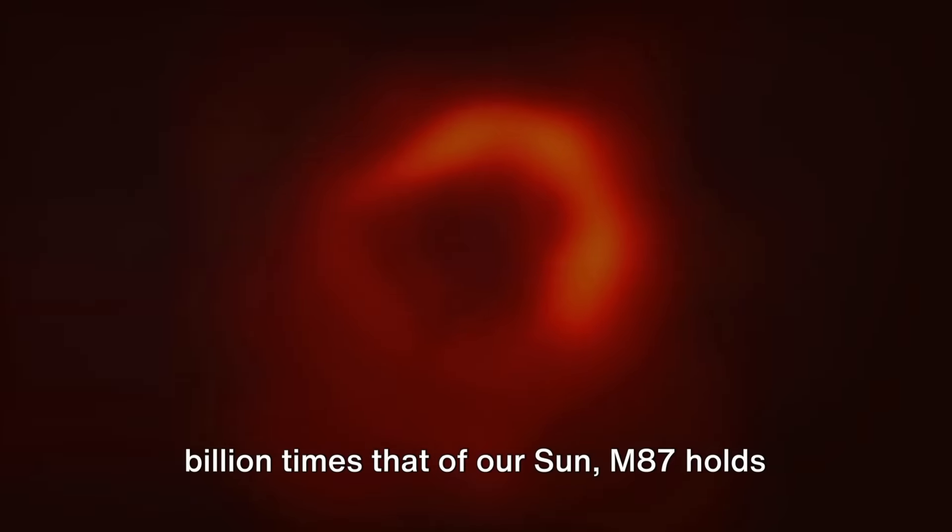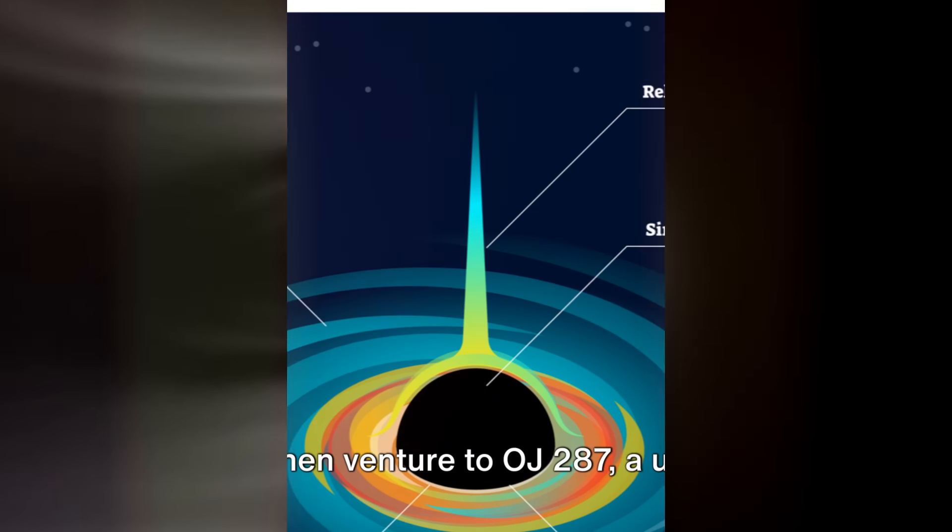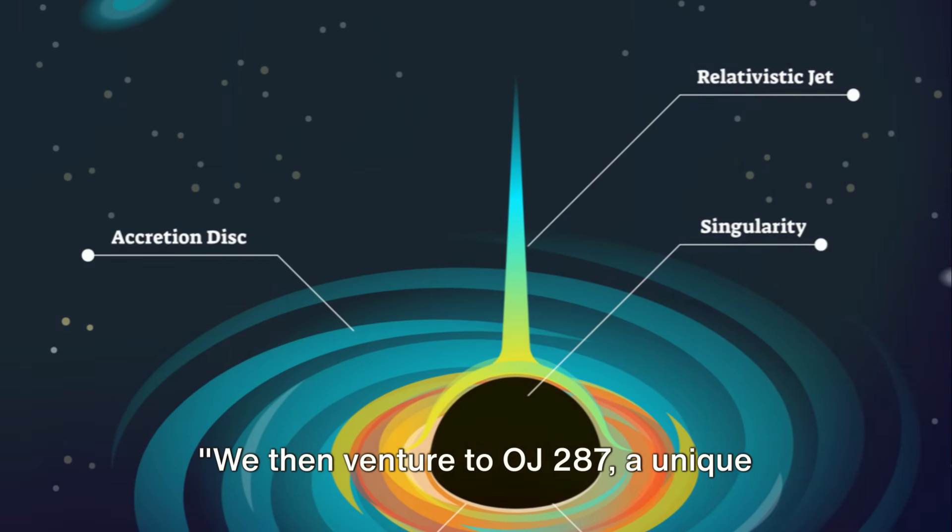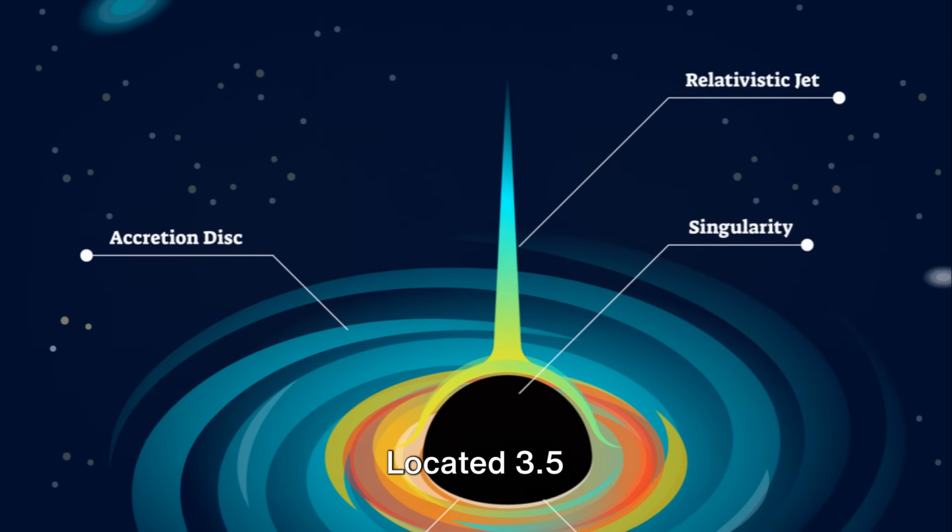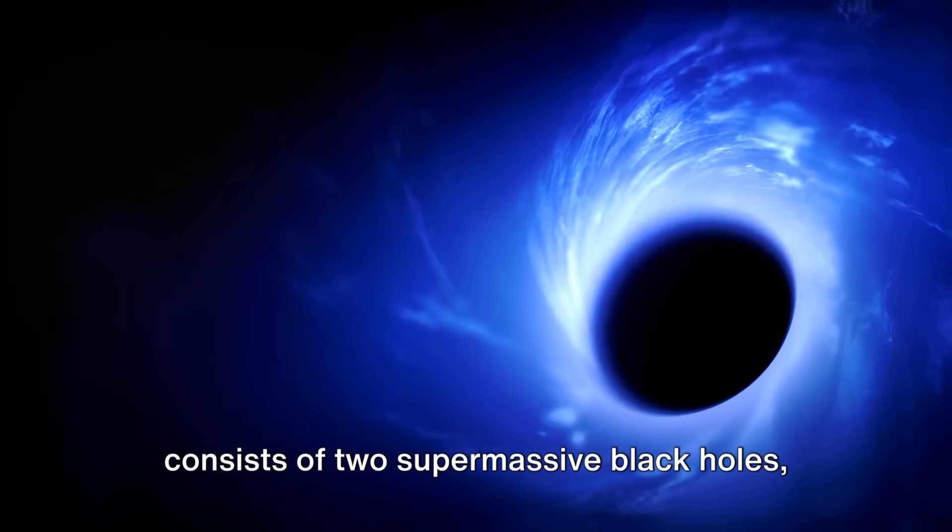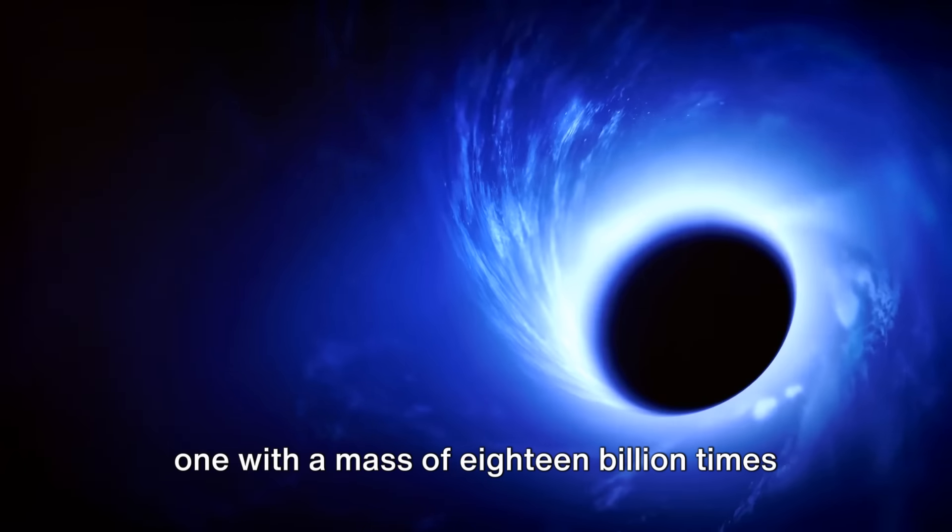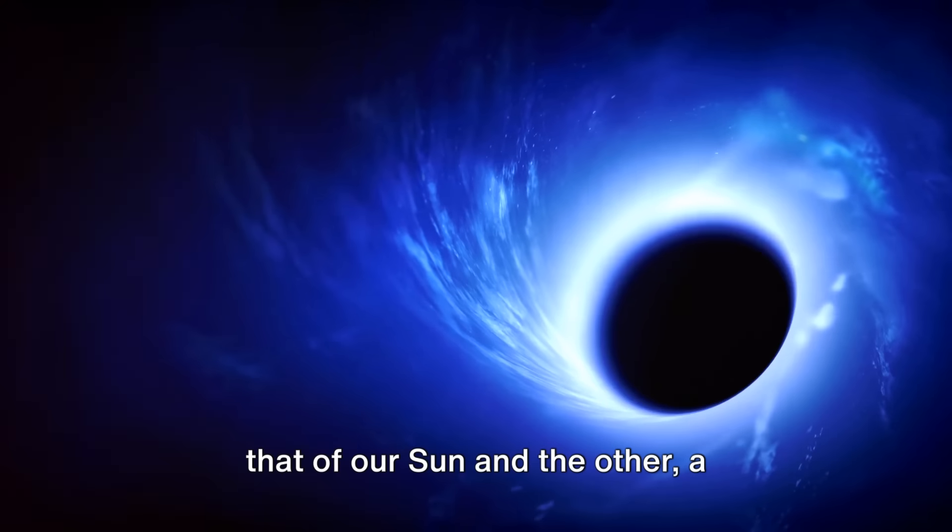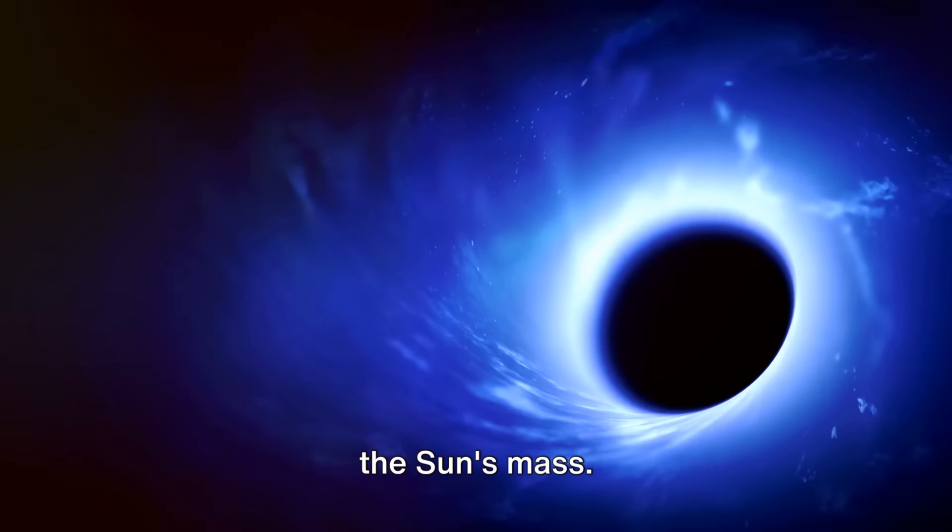Our journey then propels us across the cosmos to Ton 618, the most luminous quasar known to us. This celestial beacon, powered by a supermassive black hole, is an astounding 10.4 billion light-years away. With a mass of 66 billion times that of our sun, Ton 618's immense luminosity allows astronomers to probe the environment around the black hole and study its influence on a galactic scale.